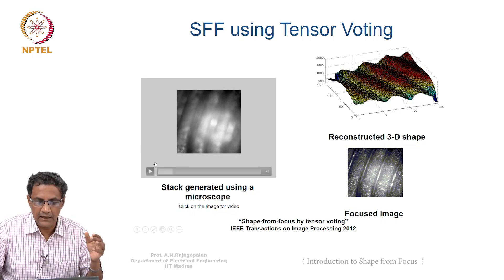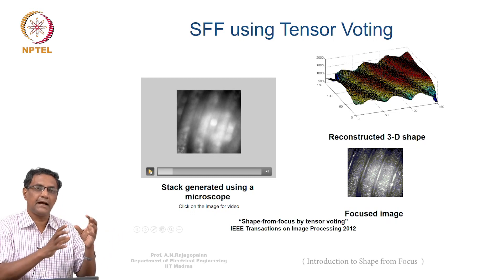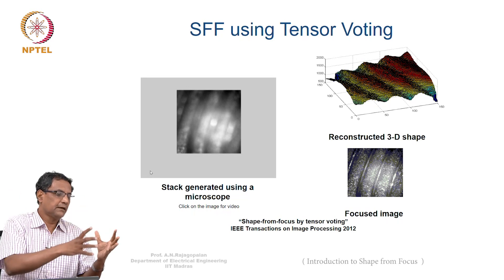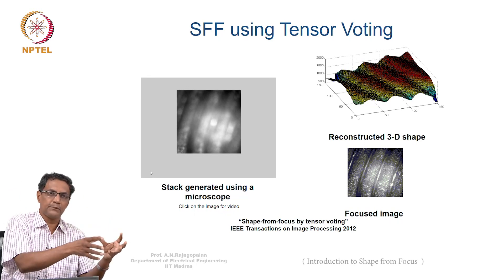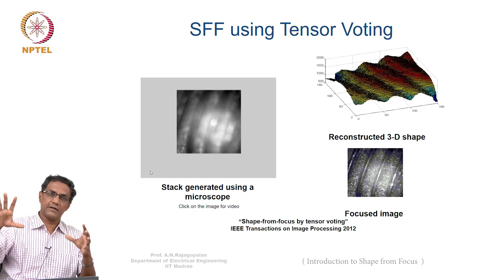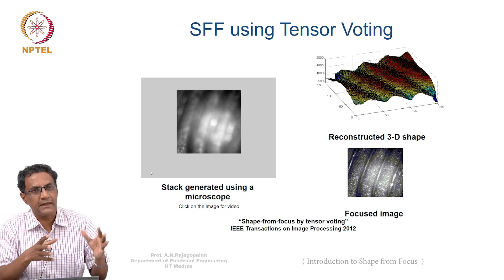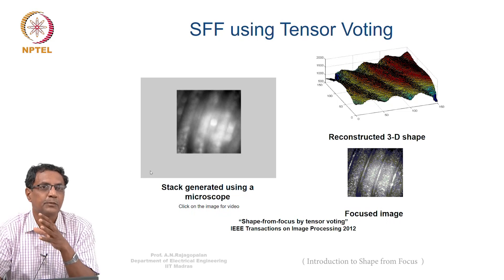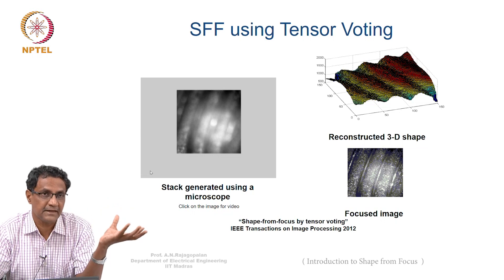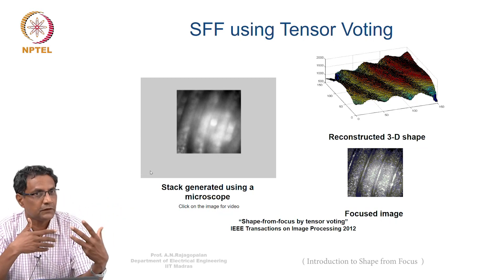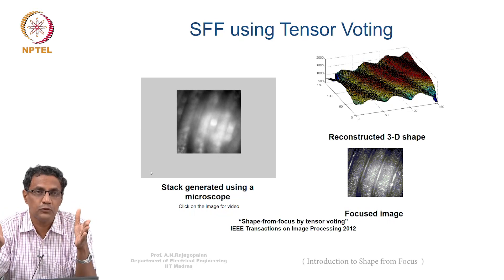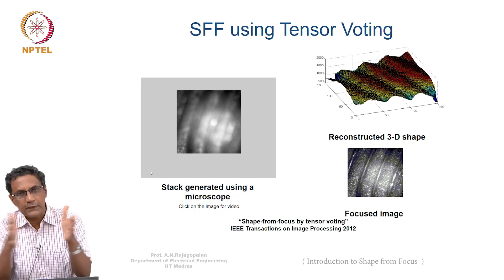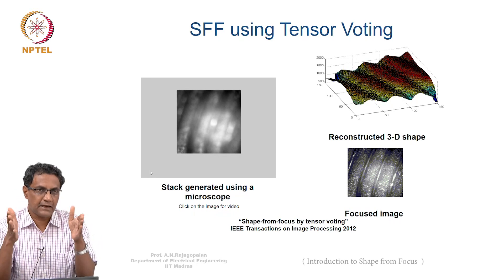The inverse problem: until now we had a forward problem — I gave you a 3D scene, it induces a certain blur on the image plane, and if you assume the image is something like Lena, you superimpose the blur and get a blurred image at the output. That is the forward problem — I know the 3D scene, I know what blur it will introduce. But now the inverse problem asks: given the image, can you tell me something about the 3D scene?